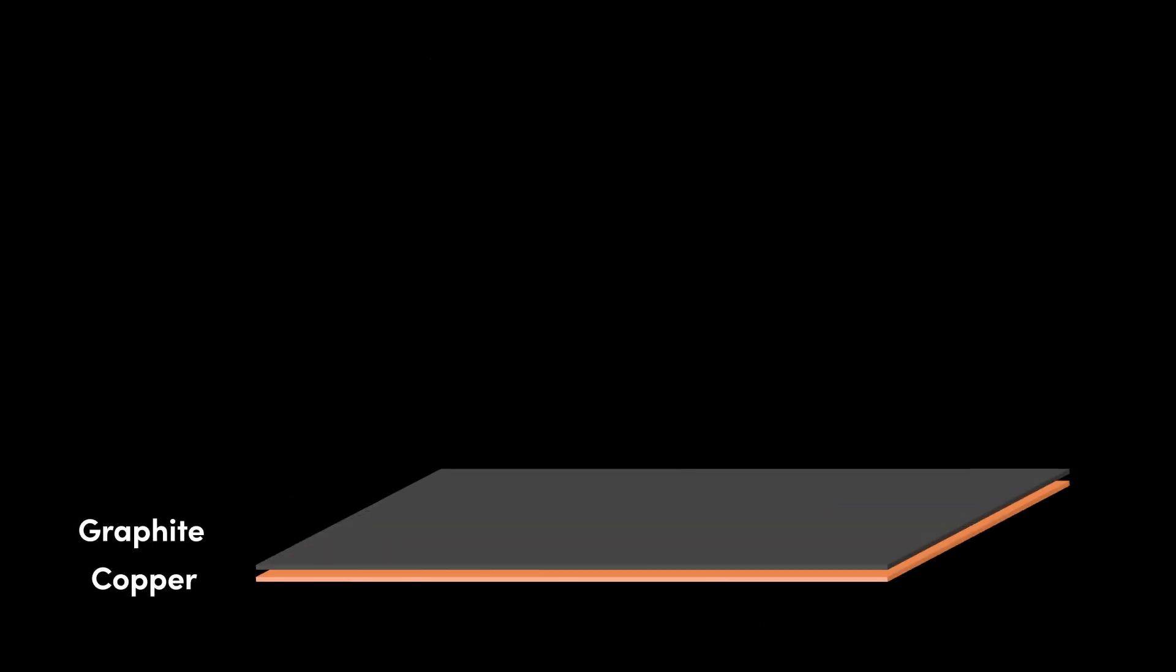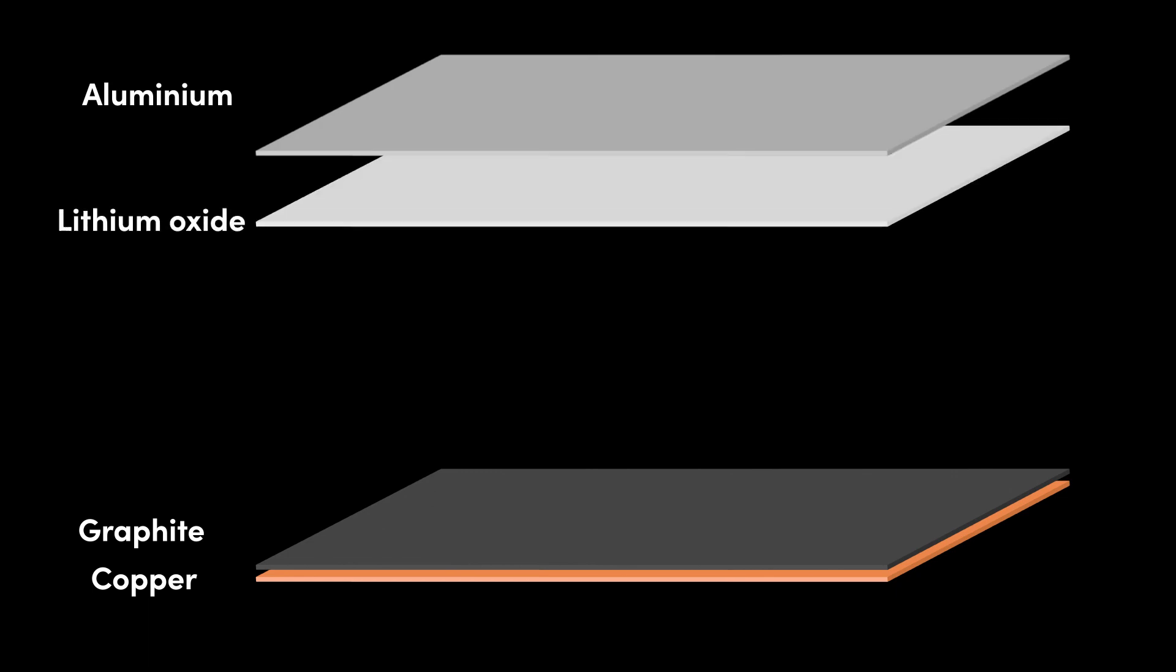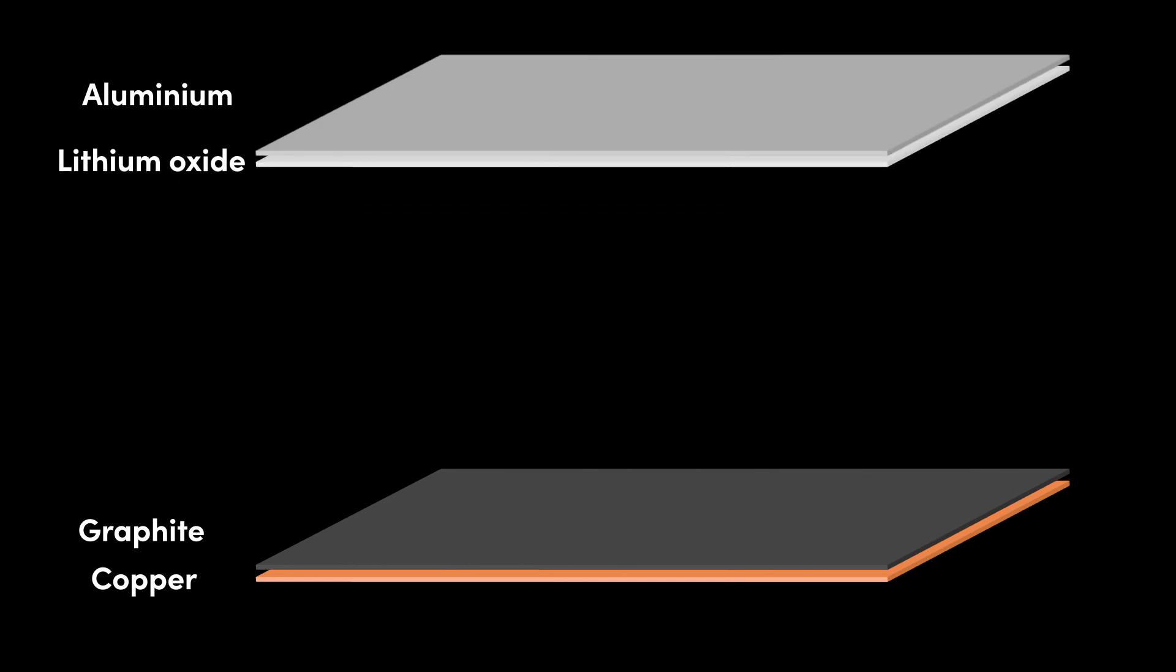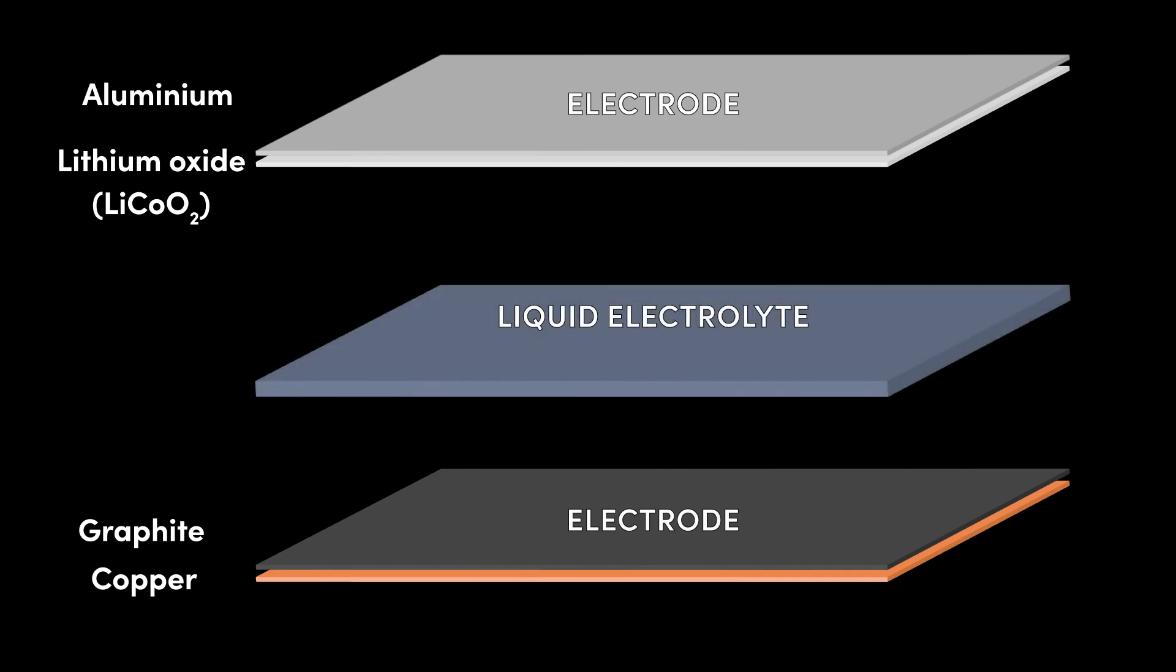A thin layer of graphite is printed onto the layer of copper. Over on the other side, a thin layer of lithium oxide compound is printed onto the layer of aluminum. The exact chemical composition of the lithium oxide compound can vary. Lithium cobalt dioxide, LiCoO2, is common. The graphite coated copper and the lithium cobalt dioxide coated aluminum form two electrodes. Between the two electrodes sits a liquid electrolyte, the most common one being lithium hexafluorophosphate dissolved in an organic solvent.